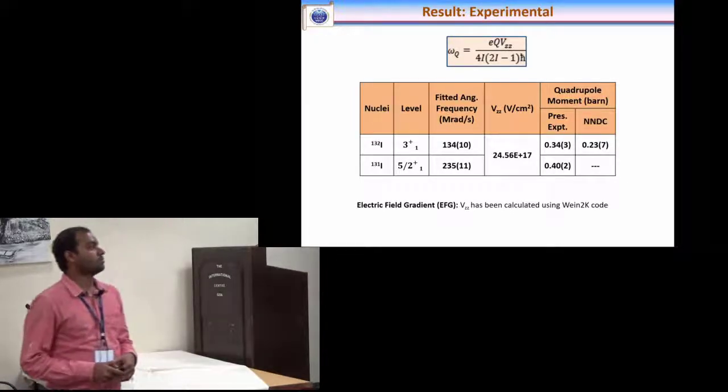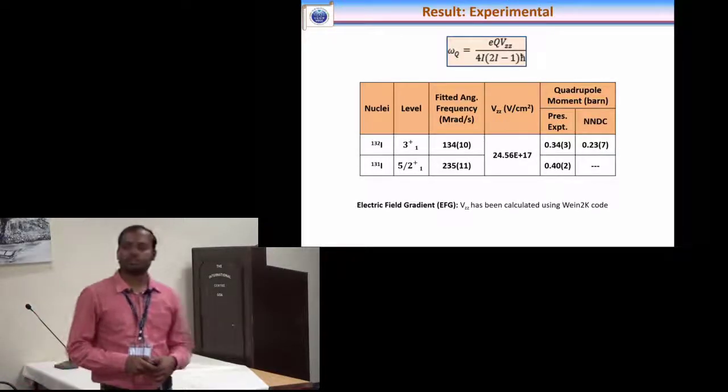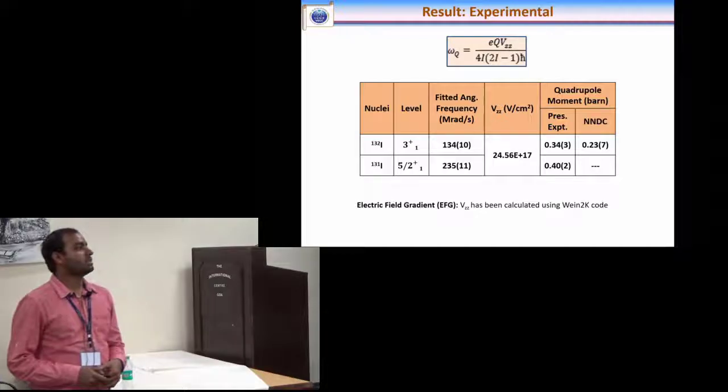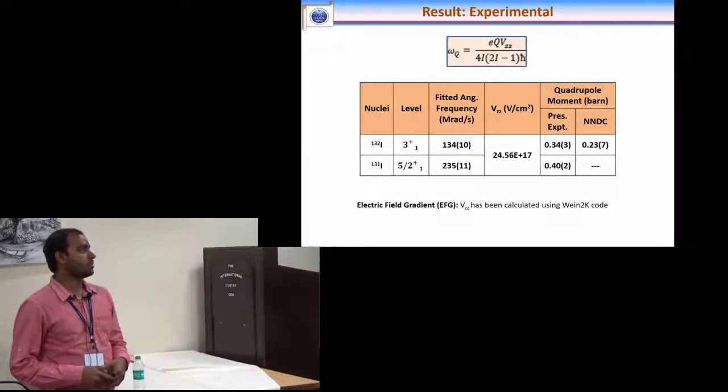From the quadrupole frequency and the known values of electric gradient field which has been calculated using Wien2k code by Professor P. Blaha, this is the present result and we have compared with the available experimental data for these two isotopes.